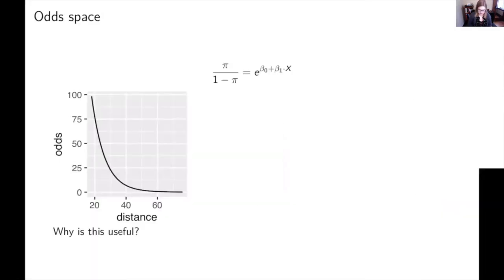Okay. So a slightly better one is the odds space. So on the previous slide, I had the log of pi over one minus pi was equal to beta zero plus beta one X. And if I want to get from the log odds to the odds, I need to get rid of that log. So I exponentiate both sides and that gets rid of the log. And so here's the equation for the odds. Pi over one minus pi is equal to E to the, that sort of linear regression equation that we're used to seeing.